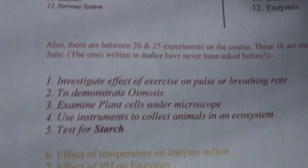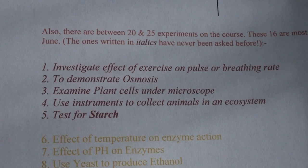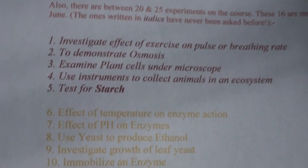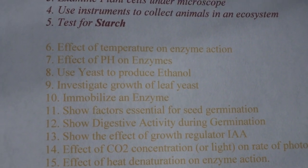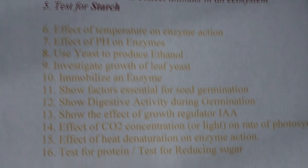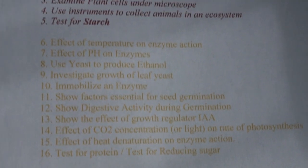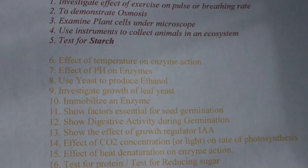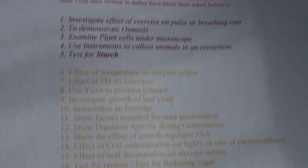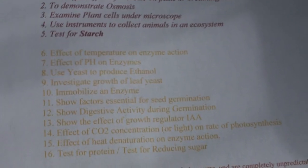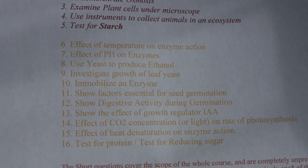For experiments, the ones that haven't been asked yet are these five, but I don't see them as being very likely to come up. I'd go for these ones as being more likely: effect of temperature on enzyme action, or pH on an enzyme, using yeast to produce ethanol, growth of leaf yeast mould as an enzyme, show factors essential for seed germination, and respiratory activity during germination. I've listed a lot of experiments there because the choice is so limited in that section — you've got three questions and you have to do two. So it's really hard to leave things out and be safe. I've tried to list these in order of likelihood, so maybe if you got down as far as twelve, that'd cover it — though it's hard to know.